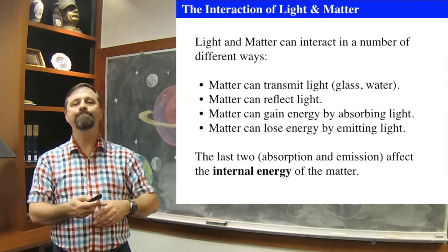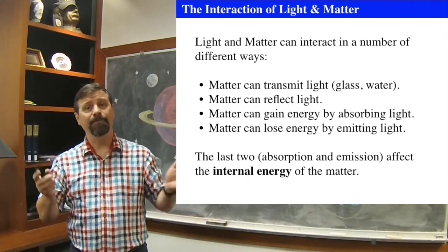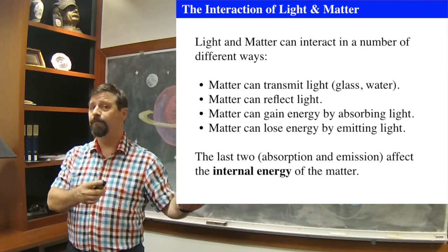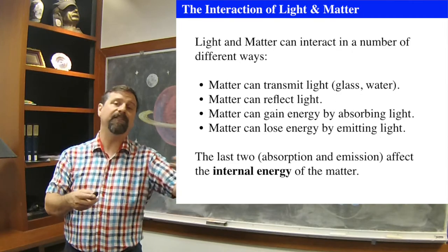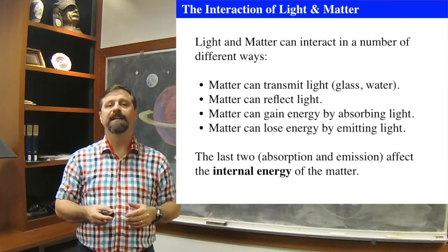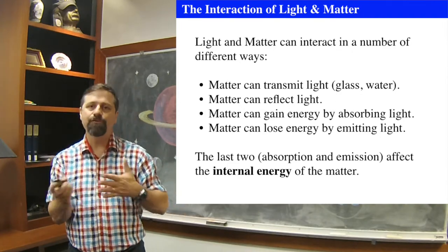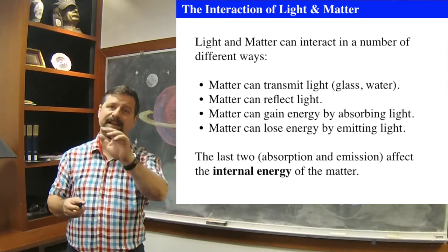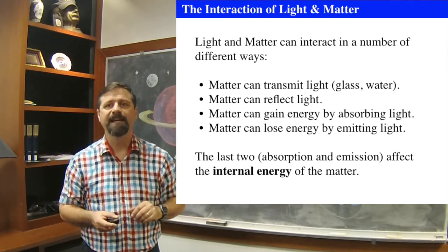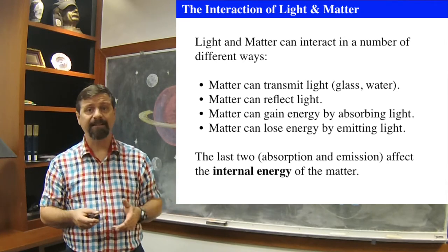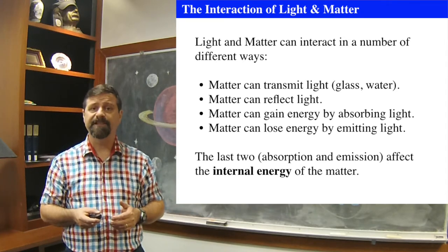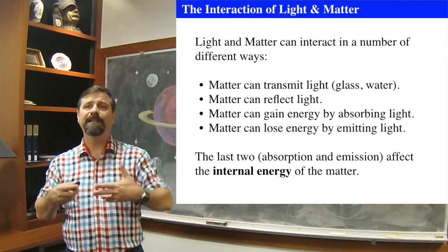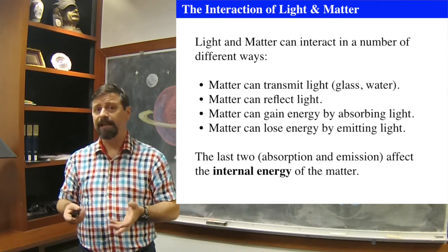Light and matter interact, and you know that light bounces off walls, reflects off things, and comes from light sources like light bulbs and things that are hot and glow. What matter can do to light is it can allow light to pass through it, such as glass passing through a lens. It can also reflect light off of various surfaces so it bounces from one surface to the next.